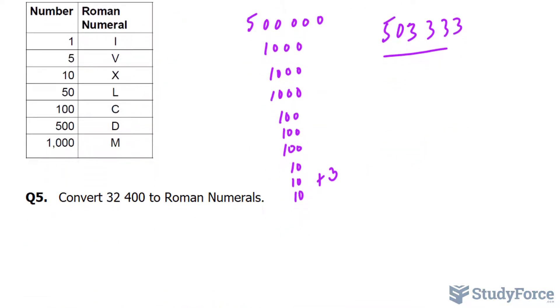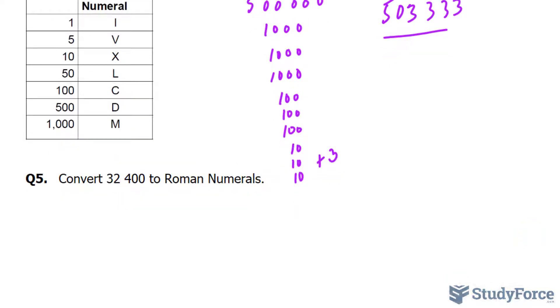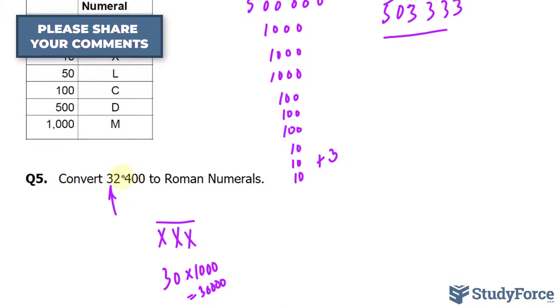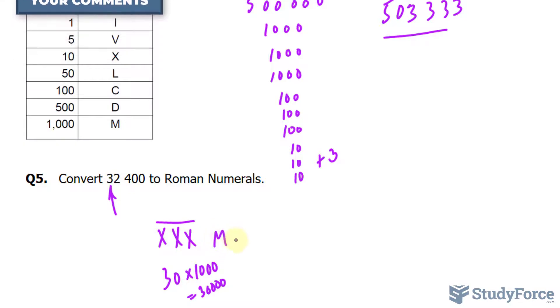We have one more example. Convert 32,400 into Roman numerals. What we can do to represent 30,000 is take three of these X's. That represents 30. And by placing a line over all three, we essentially have 30 times 1,000, which is 30,000. So we just took care of the 30,000. Now we have to do the 2,400. For the 2,000, we can write down M, M. That's 2,000 right there.